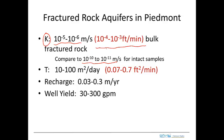This is typically the transmissivity recognized for this region — 10 to 100 meters squared per day — and we can convert that to a range in feet squared per minute. This is about the range we were seeing in our tests at the well field. These are some other characteristics — the recharge and well yield typically recognized for this area.